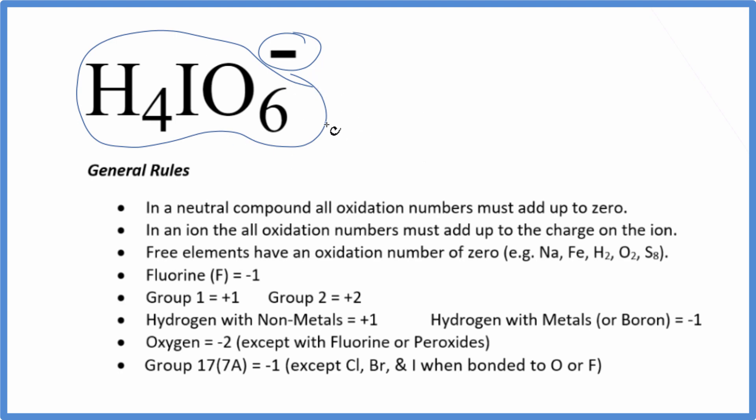To find the oxidation numbers, we should know that in an ion, all the oxidation numbers add up to the charge on the ion. So the oxidation numbers on all these elements are going to equal this 1 minus. For the hydrogen, that's going to be a plus 1. Each one of these hydrogens is plus 1.